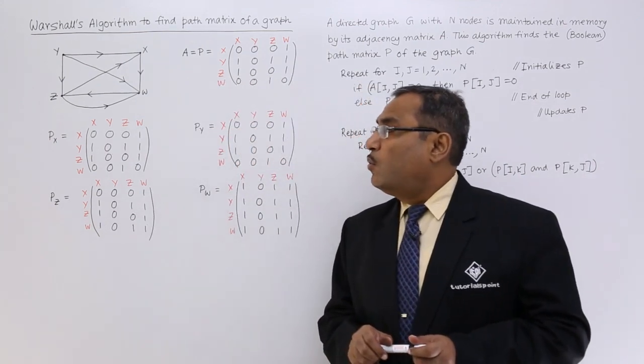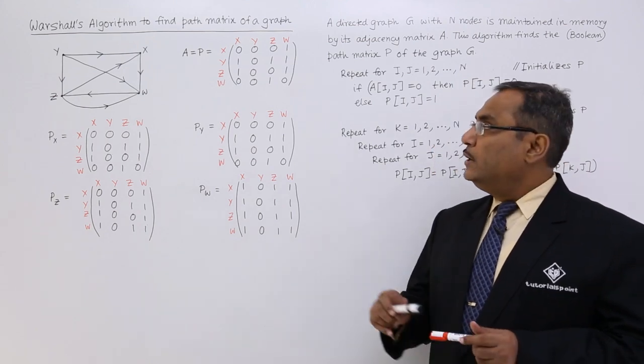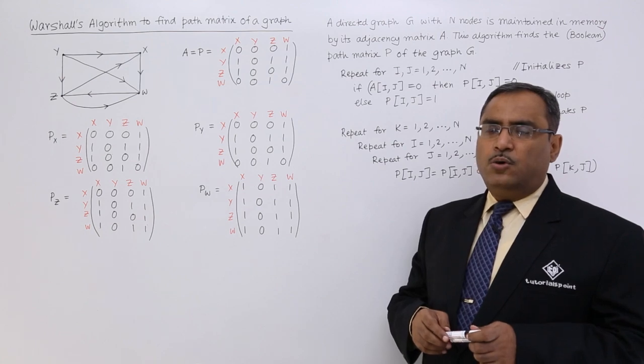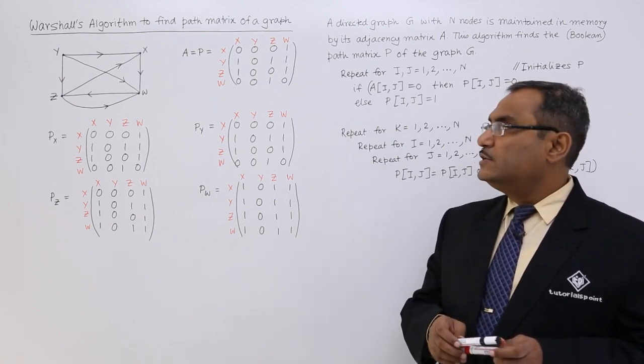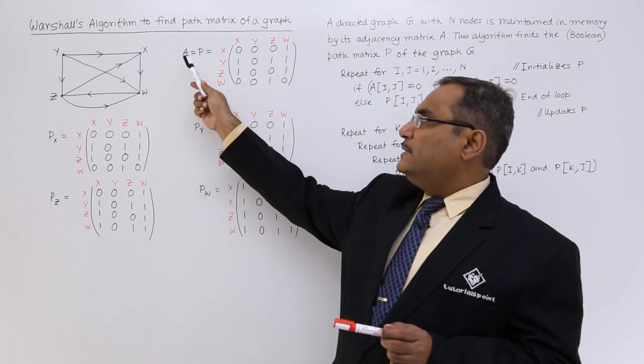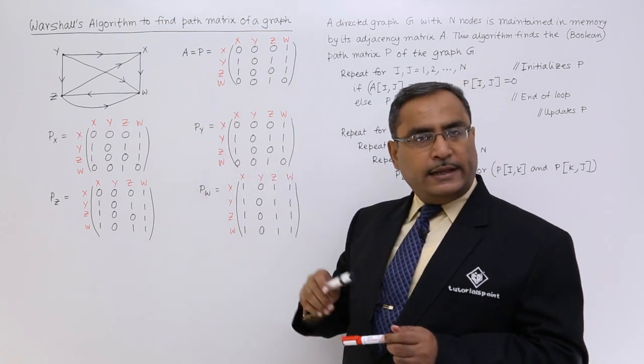We have nodes x, y, z and w. From this particular graph's adjacency matrix we are going to form our path matrix in this way. The path matrix is something like this one. From the adjacency matrix we are getting the path matrix like this.